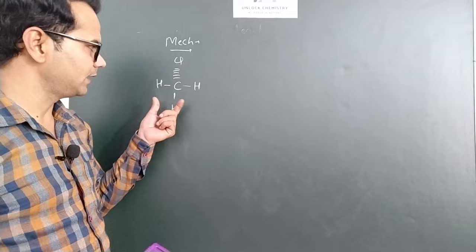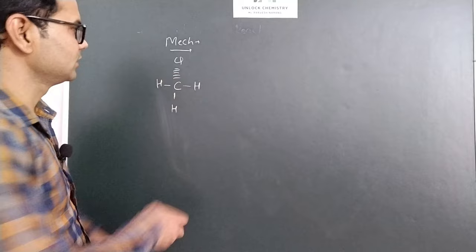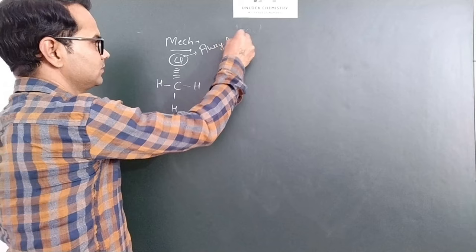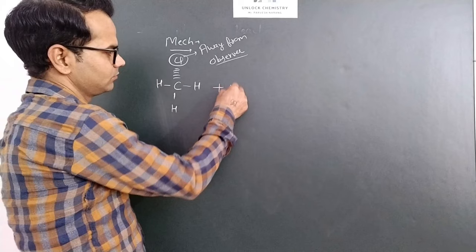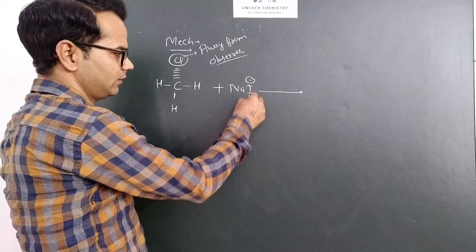For example, we have methyl chloride. The bond of carbon and chlorine is shown by a dotted line. It means this chloride is away from observer. So when it reacts with sodium iodide, here I is nucleophile.